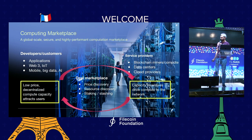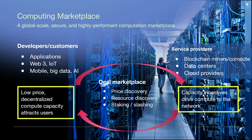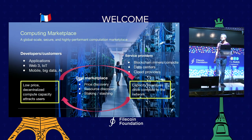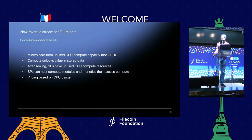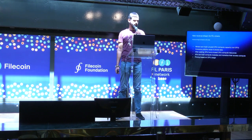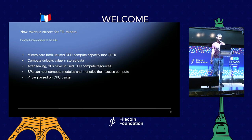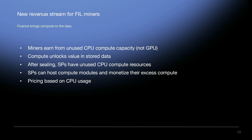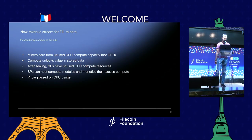A computing marketplace is where service providers and developers meet each other. Developers aim at low-price decentralized compute capacity with security guarantees like auditability provided by the protocol. Service providers can monetize their capacity through the incentives we have. This is about a new revenue stream for Filecoin miners — Fluence is another way to bring compute to the data. Miners earn from unused CPU compute capacity, and compute unlocks value in stored data. As miners already have data, they can benefit from it more.